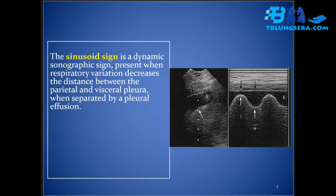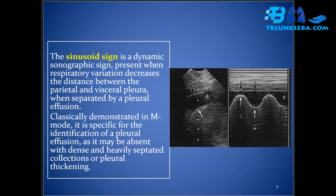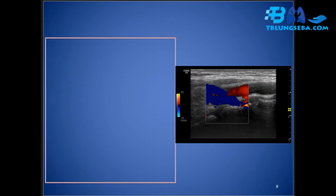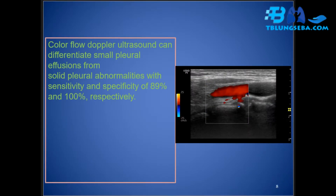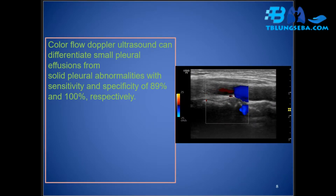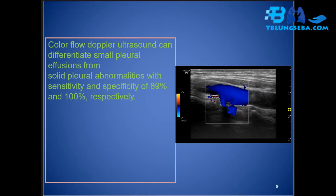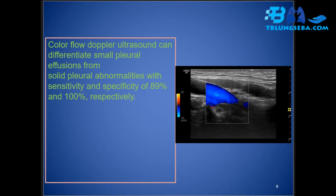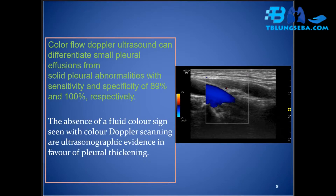The sinusoid sign is a dynamic sonographic sign present when respiratory variation decreases the distance between the parietal and visceral pleura when separated by a pleural effusion. Classically demonstrated in M-mode, it is specific for the identification of a pleural effusion, and may be absent with dense and heavily septated collections or pleural thickening. Color flow Doppler ultrasound can differentiate small pleural effusions from solid pleural abnormalities with sensitivity and specificity of 89 percent and 100 percent respectively. Absence of a fluid color sign on color Doppler scanning is ultrasonographic evidence in favor of pleural thickening.